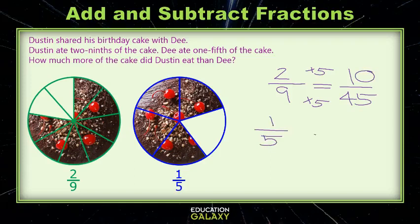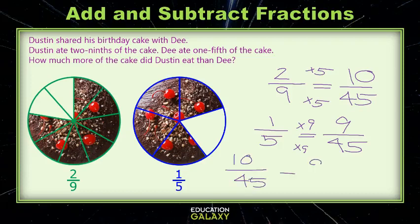For the fifth, to get 45 in the denominator, we'll need to multiply by 9. We do that top and bottom and get 9 45ths. Now we find out that the difference is subtracting the numerators, leaving the denominators alone: 1 45th. Now you know how to subtract fractions. Don't forget your common denominators.